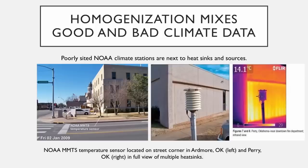Here's one in Oklahoma — Ardmore, Oklahoma, a station I visited. That arrow there shows the temperature sensor right next to the street. And then there's one in Perry, Oklahoma, near the fire station — you can see a vehicle parked right next to it. You could park right up next to that sensor and the heat from the radiator would go up into it. And you can see from this infrared picture that the wall absorbs sunlight during the day and radiates it at night. This is where science was measuring data to use in climate studies.